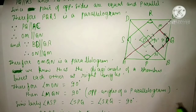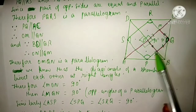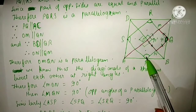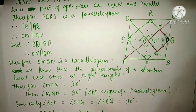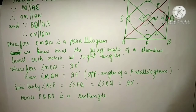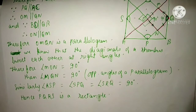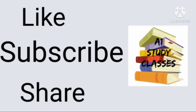Since all angles are equal to 90 degrees and opposite sides are equal and parallel, this means PQRS is a rectangle. Hence PQRS is a rectangle. Thank you everyone. If you like my videos, please like, subscribe and share my channel and stay connected with A1 Study Classes.